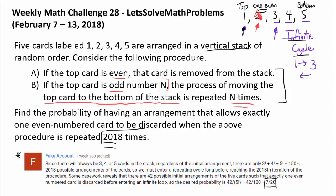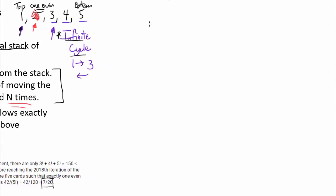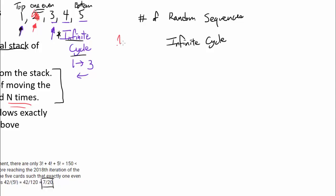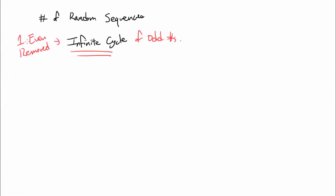This 2018 is way more than enough. In fact, this thing can repeat infinitely many times and the answer is not going to change, because this infinite cycle is going to start very quickly within a few cards. Since we know that, we basically want to find the number of random sequences of the five cards that go into infinite cycle right after one even is removed. So we want the sequence such that after one even is removed, we go into this infinite cycle of odd numbers.